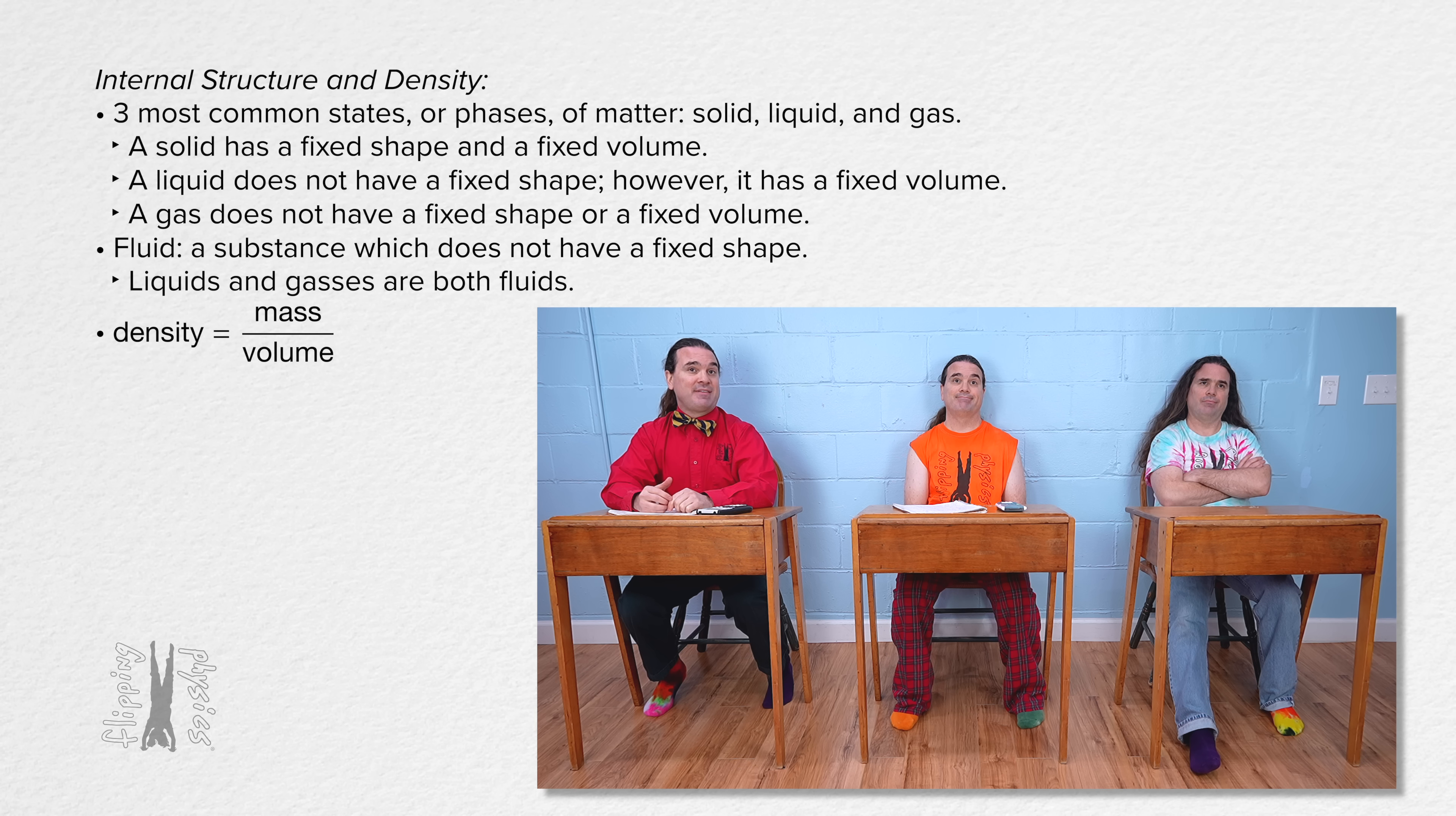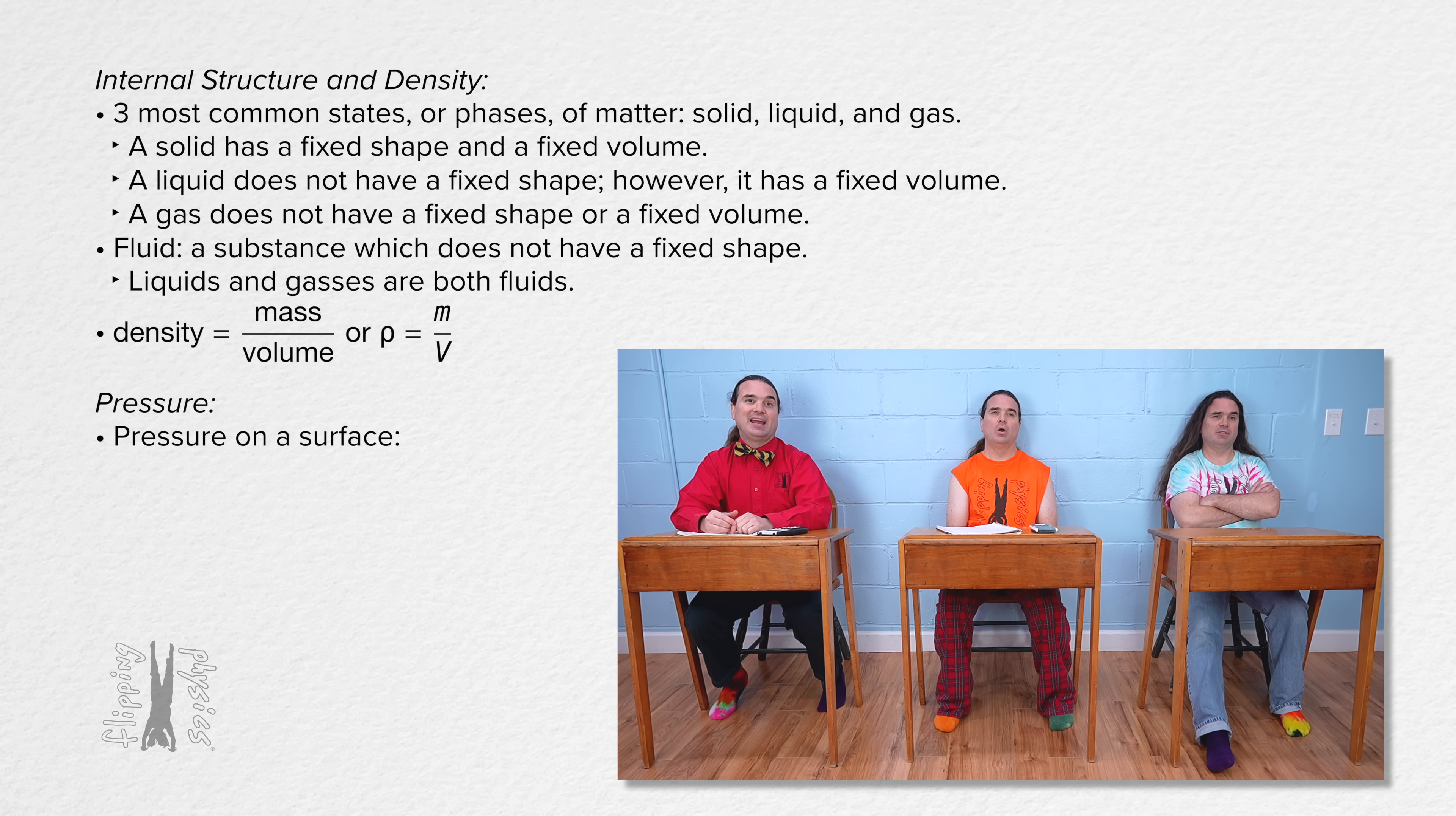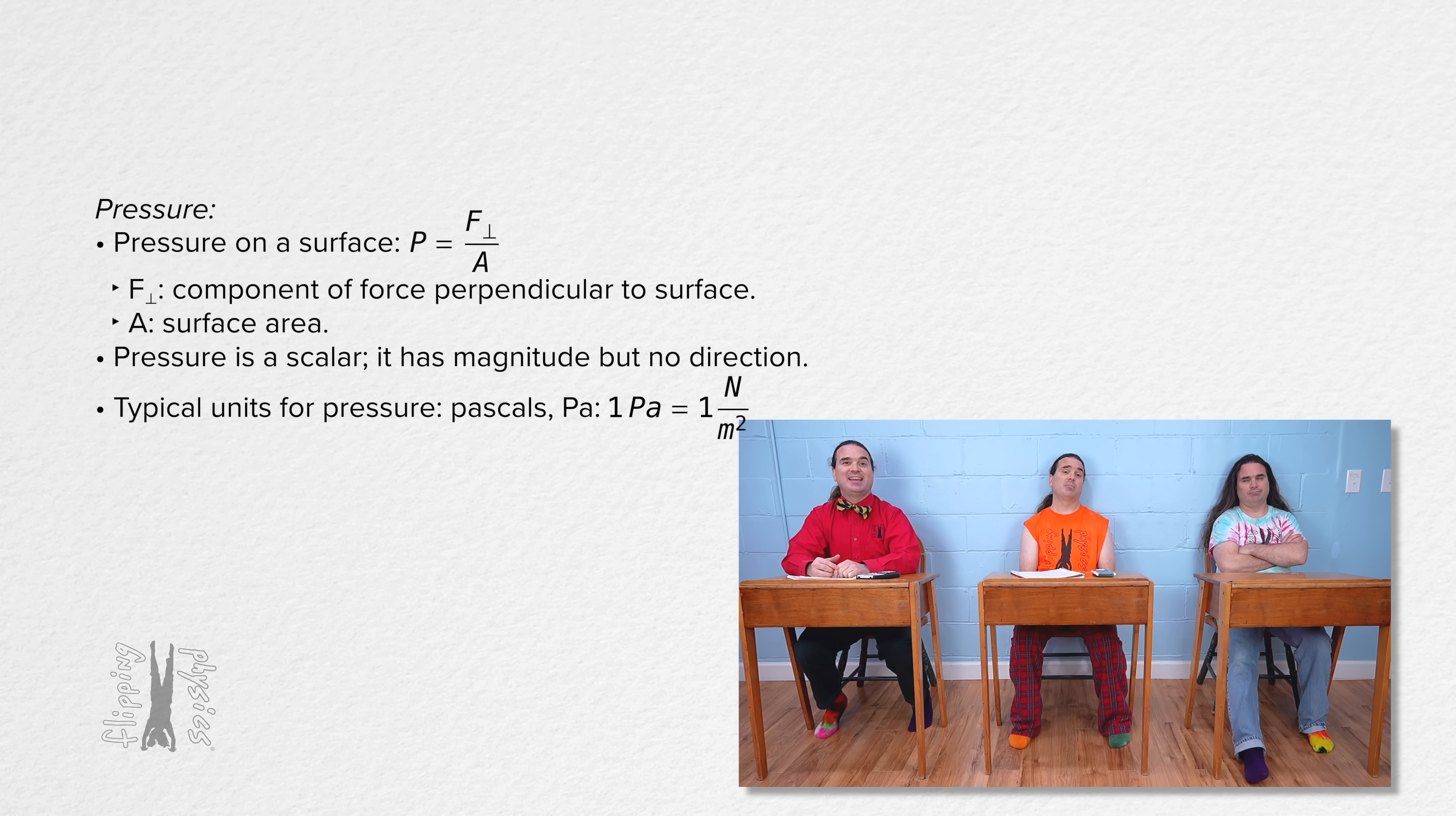Density equals mass divided by volume and the symbol we use for density is usually the lowercase Greek letter rho. Well done everybody. Please do the same thing for pressure. Okay. The general equation for pressure on a surface is pressure equals force perpendicular, or the component of the force perpendicular to the surface, divided by the area of the surface upon which it acts. Pressure is a scalar, therefore it has magnitude but no direction. Typical units for pressure are pascals, Pa, where one pascal equals one newton per square meter.